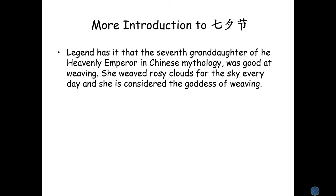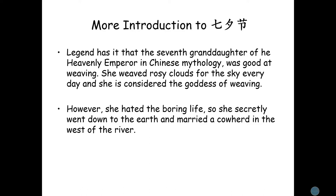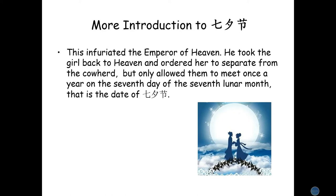Legend has it that the seventh granddaughter of the heavenly emperor in Chinese mythology was good at weaving. She wove rosy clouds for the sky every day and is considered the goddess of weaving. However, she hated the boring life, so she secretly went down to the earth and married a cowherd. This infuriated the emperor of heaven. He took the girl back to heaven and ordered her to separate from the cowherd, but only allowed them to meet once a year on the seventh day of the seventh lunar month — the date of Qi Xi Jie.